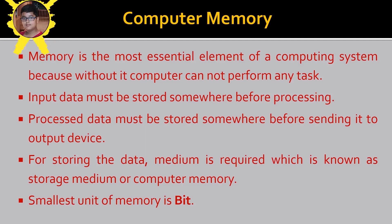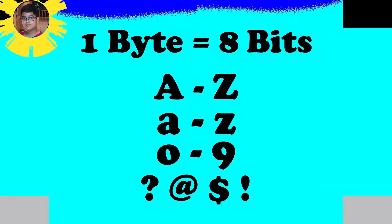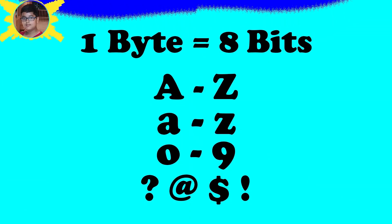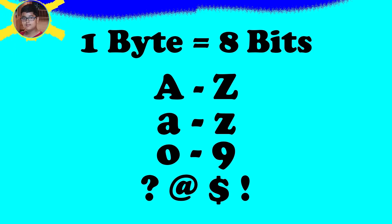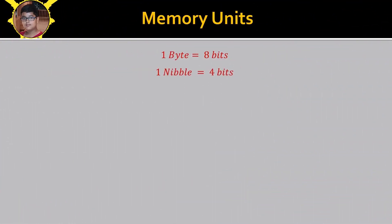Because only two symbols are used for storing data, a computer is known as a binary device. Regarding memory units: one byte is equal to eight bits. It may be assumed that one byte is required for storing one character. A character may be capital A to Z, lowercase a to z, numerals 0 to 9, or special characters like question mark, at the rate, brackets, etc.